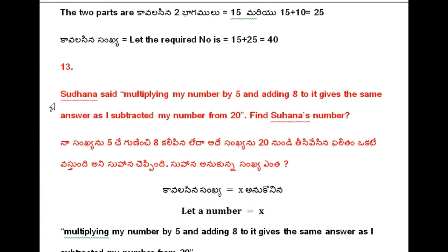So 13th question. Sudha said that multiplying her number by 5 and adding 8 gives the same result as when she subtracted her number from 20. Then find Sudha's number.